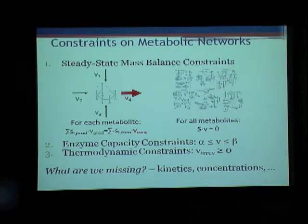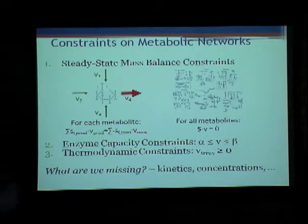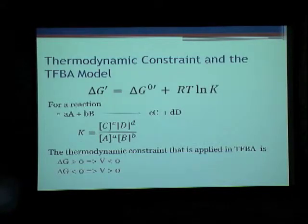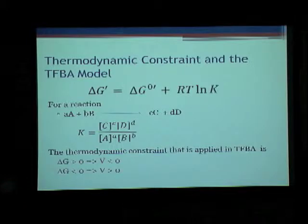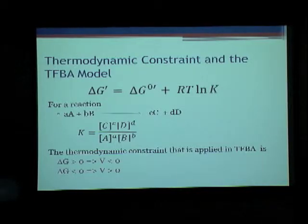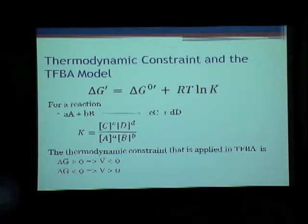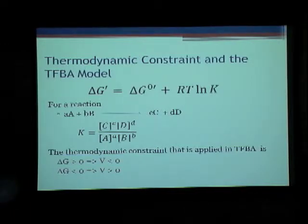What are we missing out on? We don't consider the kinetics, and except for thermodynamic constraints, we don't consider the concentrations. It's a steady state analysis. Regarding thermodynamic constraints: from the second law of thermodynamics, we know that for a flux to be positive for a reaction, delta G has to be negative. We calculate delta G using the formula: delta G equals delta G0 — the delta G of reaction under standard conditions — plus the equilibrium constant term. So, if the delta G is positive, then the flux is negative; if delta G is negative, then the flux has to be positive. This is the thermodynamic constraint that we apply.